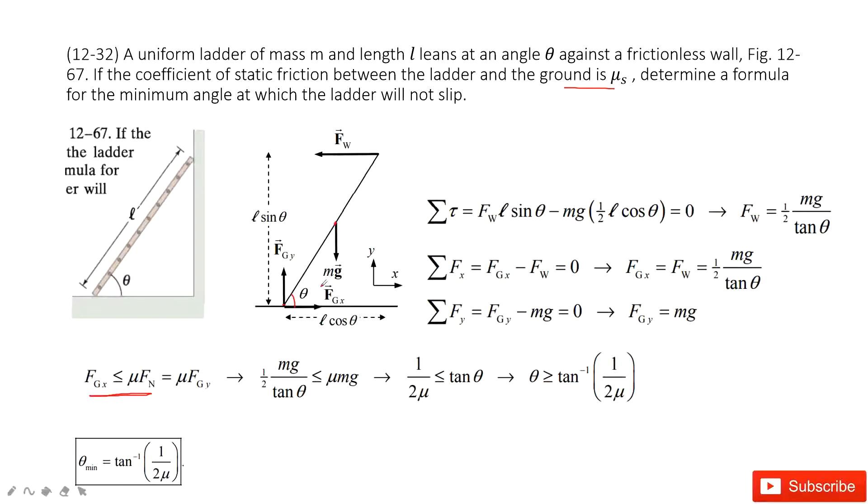Now we start from the very beginning. First of all, we want to make sure the net force is zero. So look at the x-component. We have F_gx minus F_w. This is the wall, the force the wall to the stick, equal to zero. And then we look at the y-component. We have the gravity and the F_gy. So F_gy minus the gravity equal to zero. So there we have these two forces.